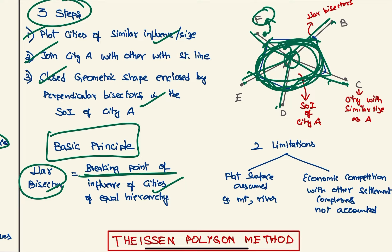That is the basic principle here, and there are two limitations. First of all, flat surface is assumed. For example, if there is a mountain here, a person living here won't go to B; rather he would go to A only. And second, the economic competition with other settlement complexes—like if there is another settlement complex here, this is not considered in this method.